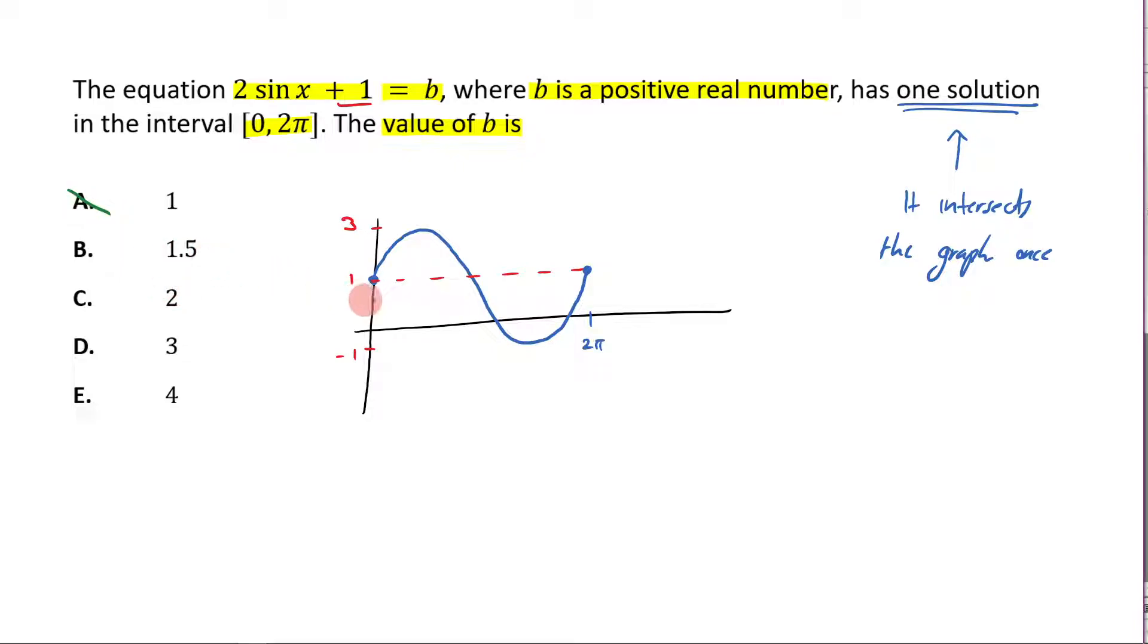1.5, it would be a bit above there. It's intersecting it twice. So that's no good. If it was 2, it would be intersecting it twice as well. So that's no good.